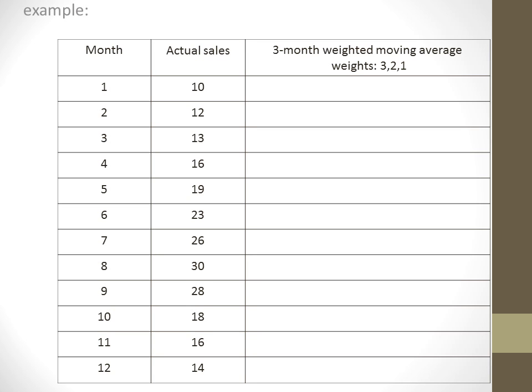Here is the example. We have 12 months with the actual sales for each month. Also, we have the three-month weighted moving average column with weights 3, 2, and 1.